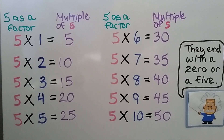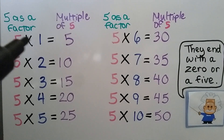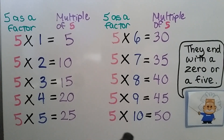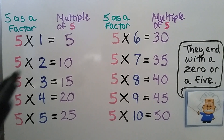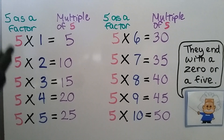Here we have the 5 times table going up to 10. We can see there's a 5 as a factor for all of them — it goes 1, 2, 3, 4, 5, 6, 7, 8, 9, 10. Each of these products is a multiple of 5 because there's a 5 as a factor.